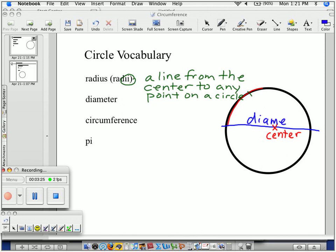So the definition of a diameter is a line from one side to the other side, and it travels through the center.